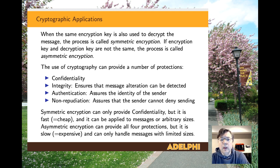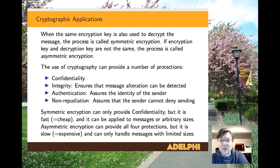When we use the same key to encrypt as we use to decrypt in order to recover the plaintext, we call that symmetric encryption. If the key to encrypt is not the same key as we use to decrypt, we call it asymmetric encryption. Symmetric encryption is fast, much faster than asymmetric encryption, and there is really no size limit on the message we're trying to convey. Asymmetric encryption is slow and there is a limit on the message size, but it can provide more protections than symmetric encryption can.